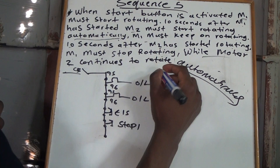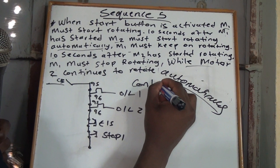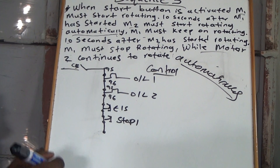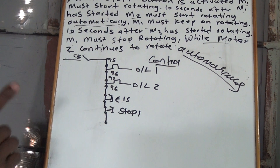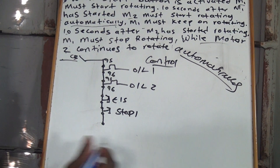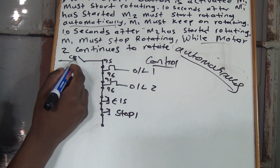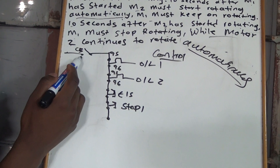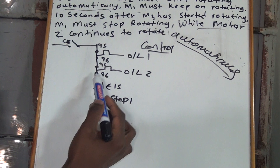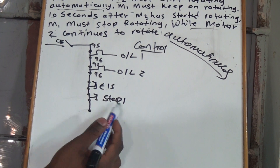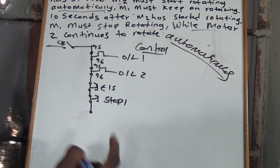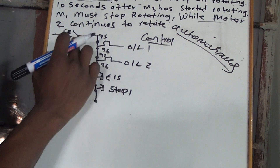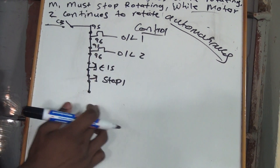So I will only draw the control circuit. Go and watch Sequence 1 for your main circuit. So this is how your control circuit will be — where the CB, overload 1, overload 2, emergency stop, then stop button. I'm just going to explain the tricky part; the rest we all know how it goes.